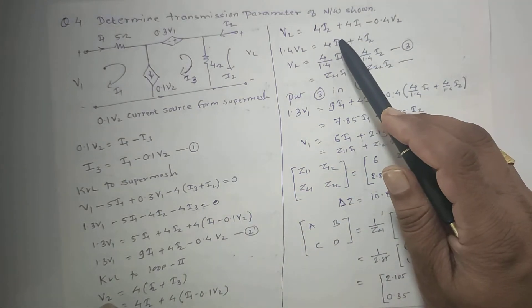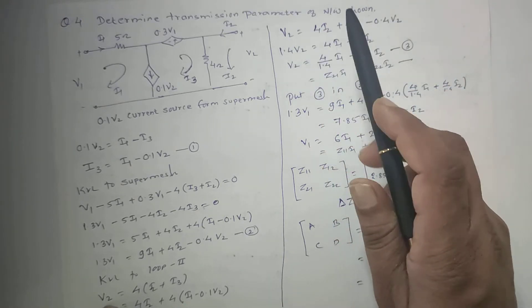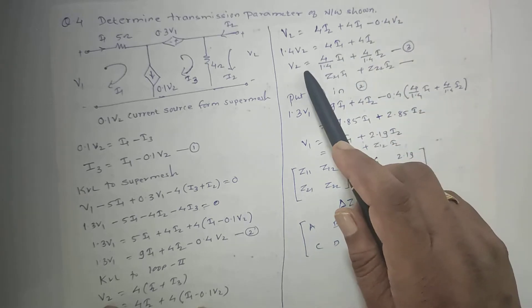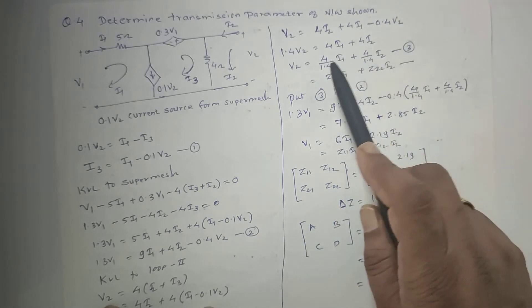Then we will simplify: 4I2 plus 4I1 minus 0.4V2, this 0.4V2 moves to the left side, so V2 equals 4I2 plus 4I1 divided by 1.4. This is equation 3.